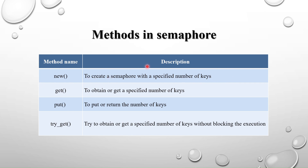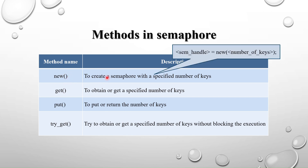The first method is `new`. To create a semaphore with a specified number of keys, we use the new method. Since semaphore is a class, we create an object using new. The syntax is: `sem_handle = new(keys)`, where keys is the number of keys available. By default it is one.